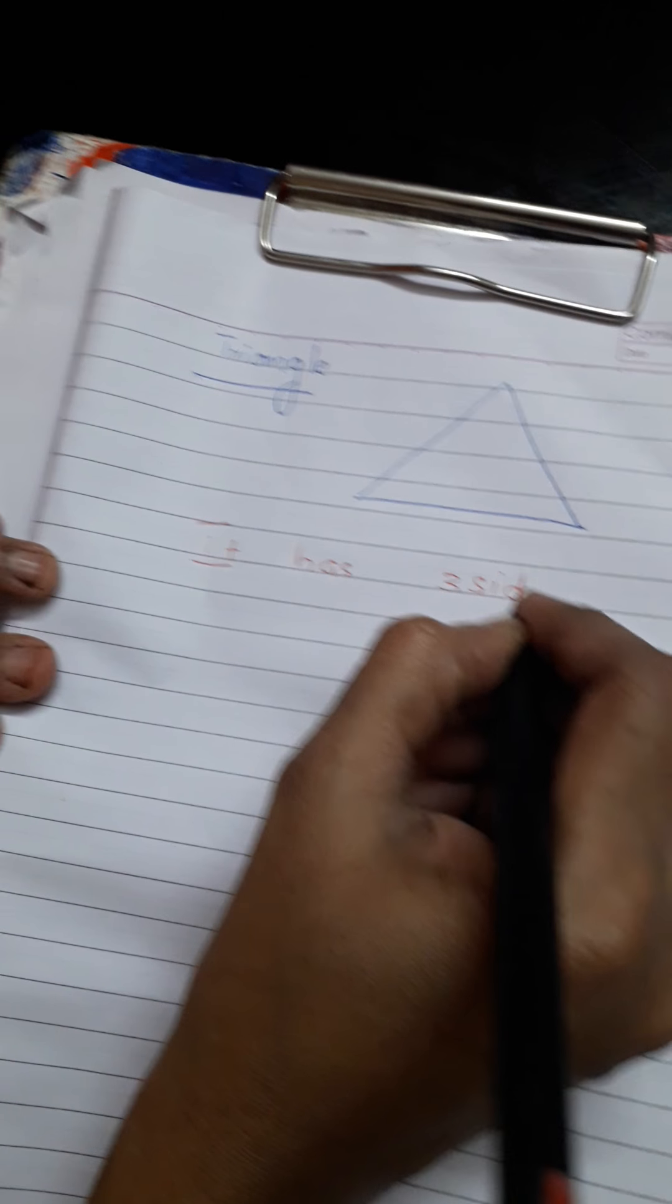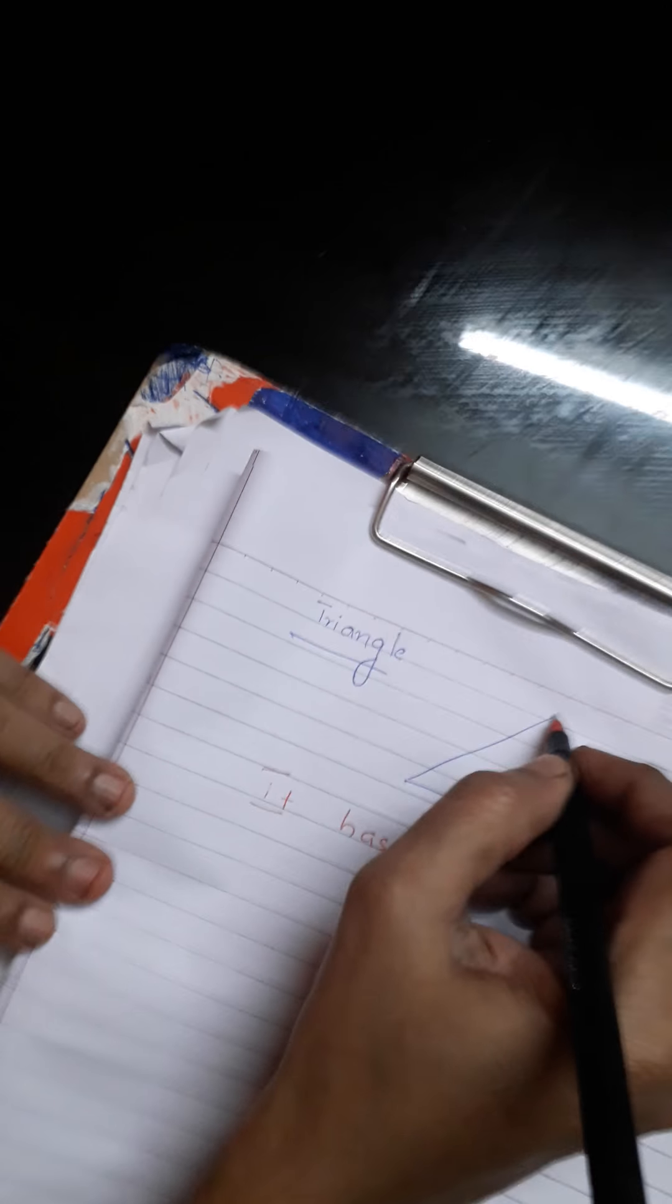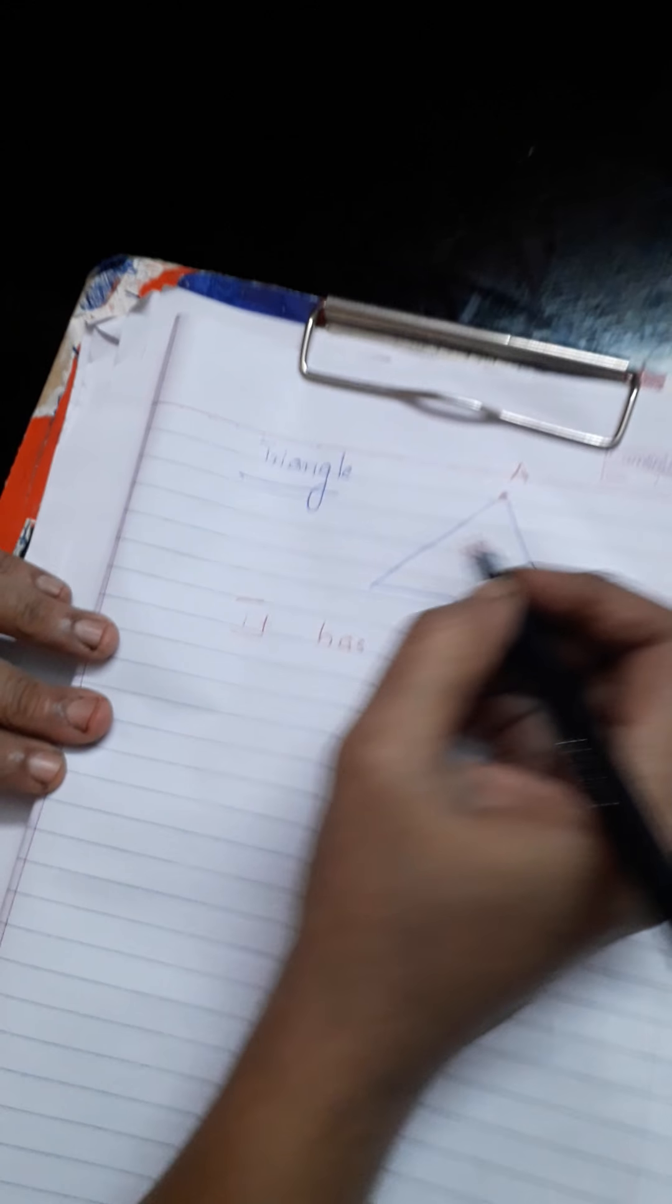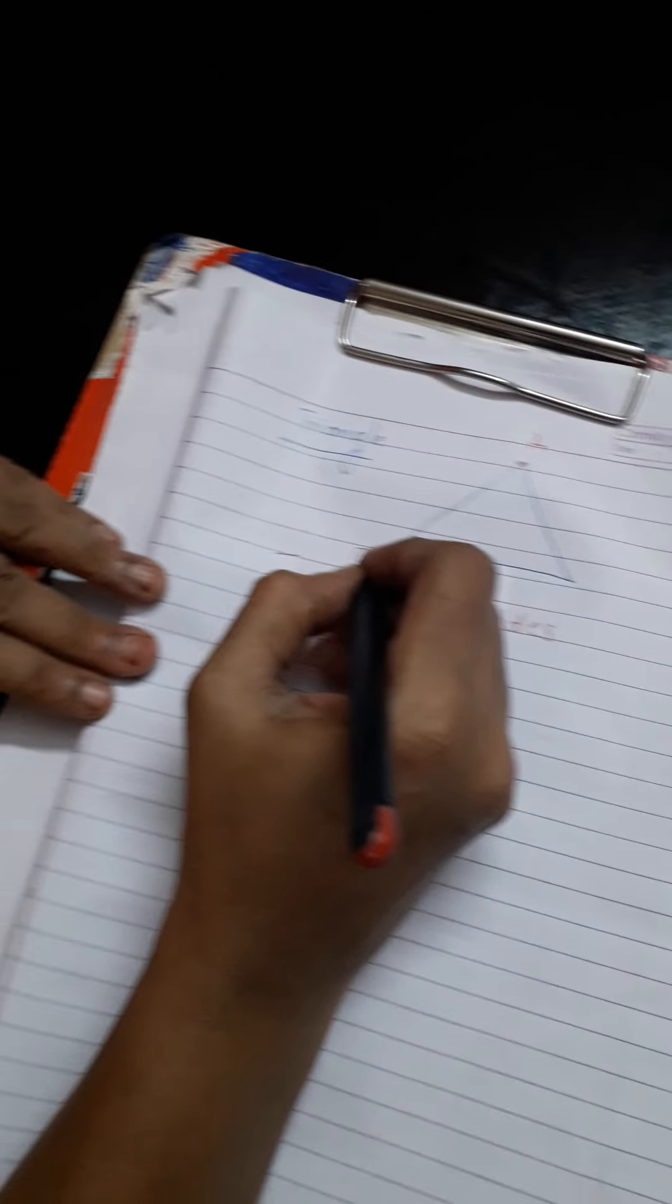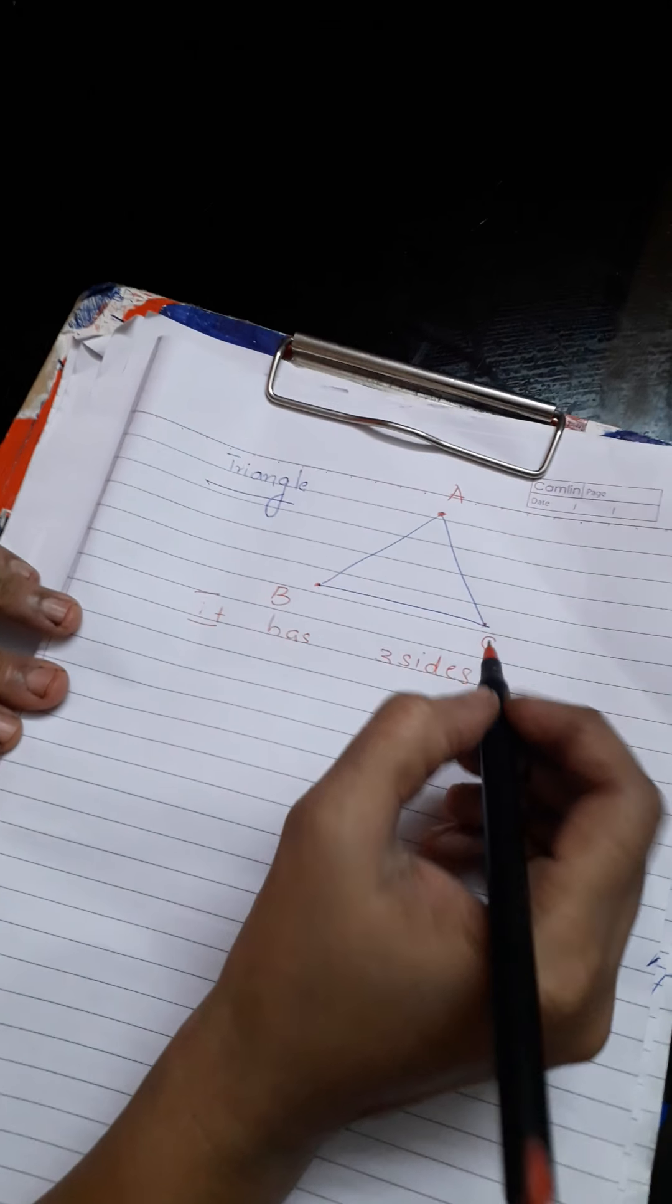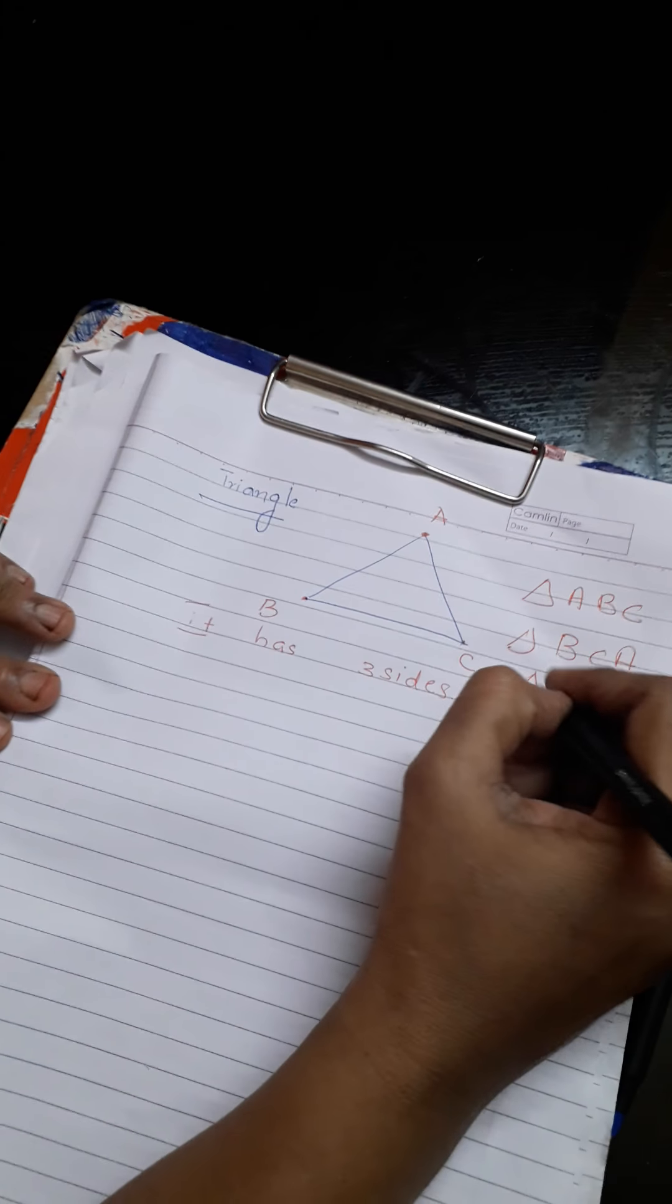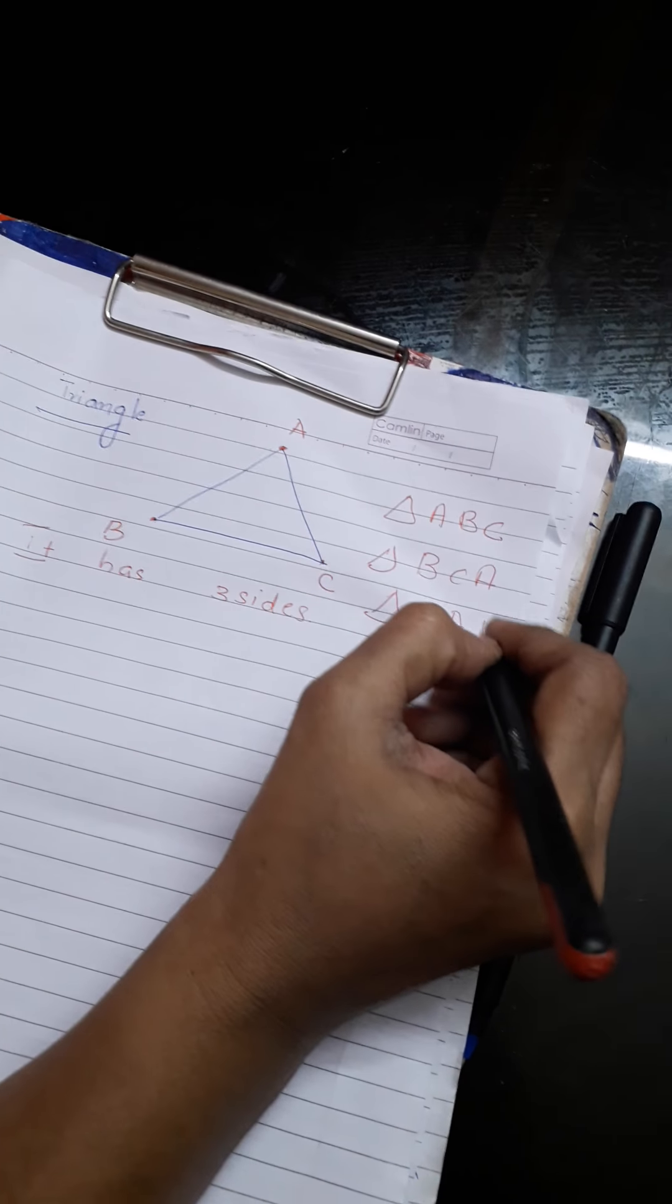When you want to name the sides, when two sides meet, a vertex is formed. We can call it as A. Here it is B. It is C. So it is a triangle ABC, or we can name it as BCA or we can name it as CAB, anything.